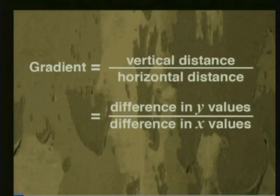We can say that the vertical distance is the difference between the y values and the horizontal distance is the difference between the x values, which means that the gradient is the difference in the y values divided by the differences in the x values.